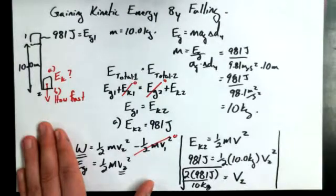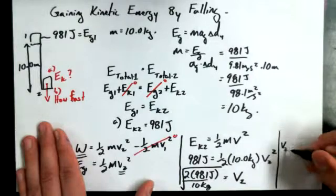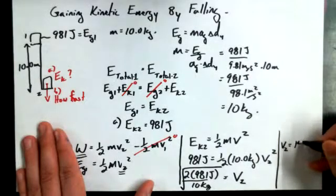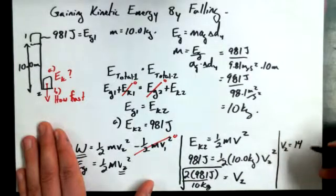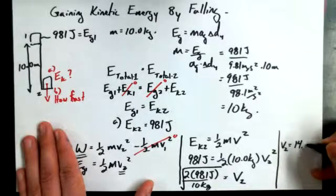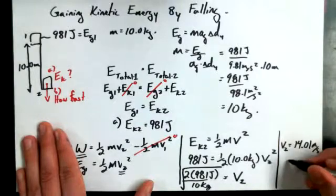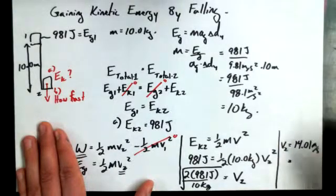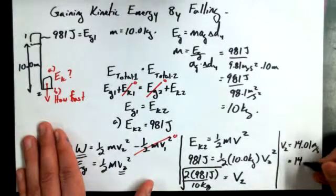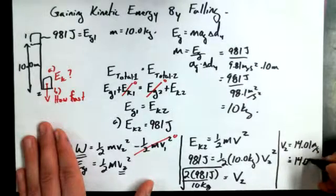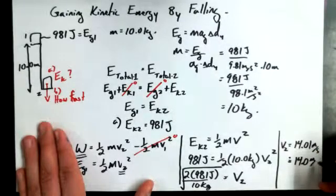Somebody who's quick on the calculator. 2 times 981 divided by 10 all square root. 14.007? Yes. Okay, 14.01. Let's leave it at four digits. 14.01 meters per second. And really we only ever had three sig figs here, so let's just leave it as 14.0 approximately meters per second.